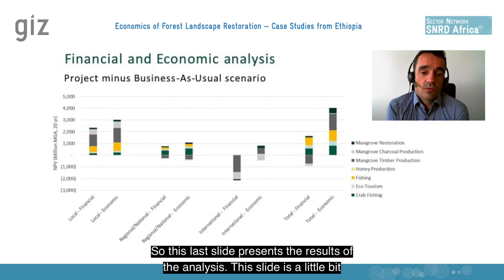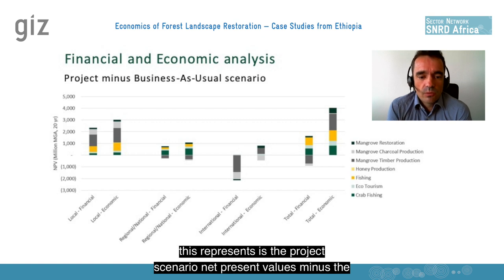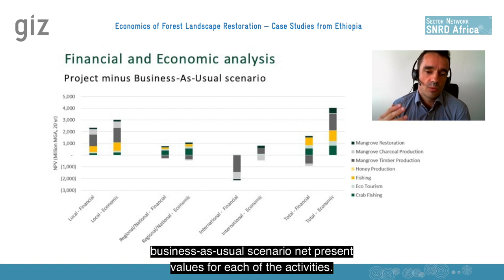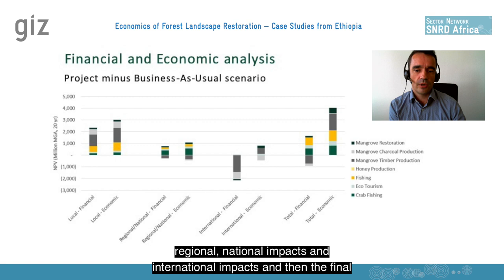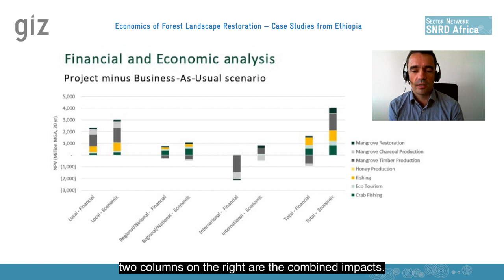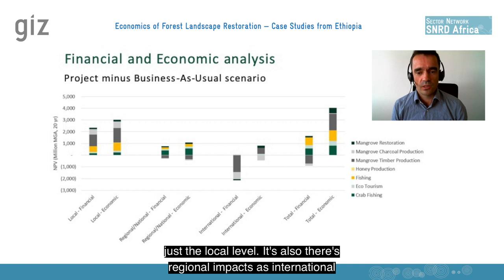The last slide presents the results of the analysis. What this represents is the project scenario net present values minus the business-as-usual scenario net present values for each activity. There are four sets of columns: local impacts, regional, national, and international impacts, with the final two columns showing combined impacts. You can see that mangroves influence more than just the local level — there are also regional and international impacts. Different costs are felt at different levels: at the international level we see where the project costs are felt, as it's funded internationally, but the benefits are experienced at the local level.